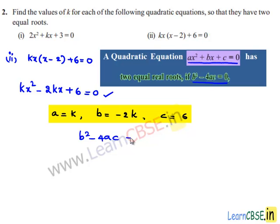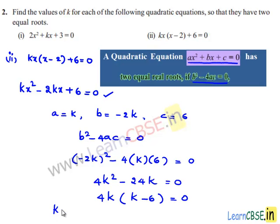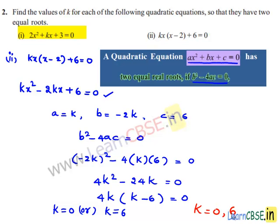Setting b² - 4ac = 0: (-2k)² - 4 × k × 6 = 0, so 4k² - 24k = 0. Taking 4k as common gives 4k(k - 6) = 0. Therefore k = 0 or k = 6.